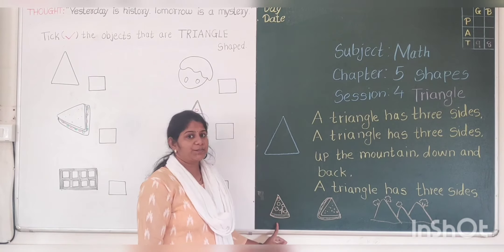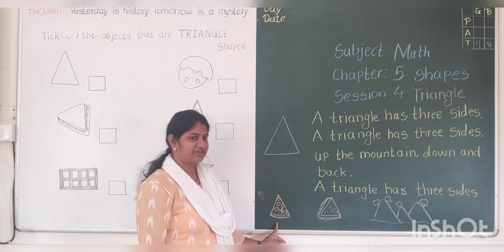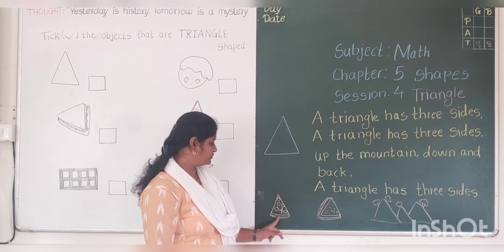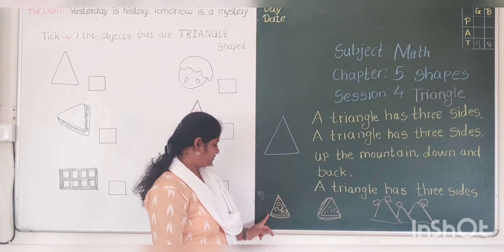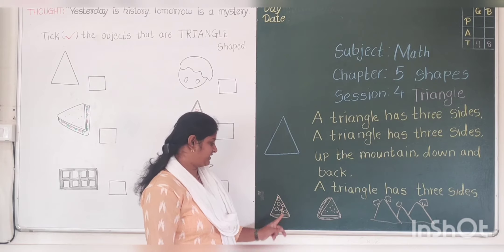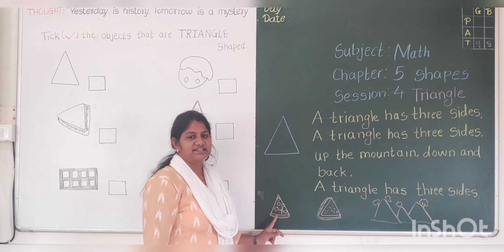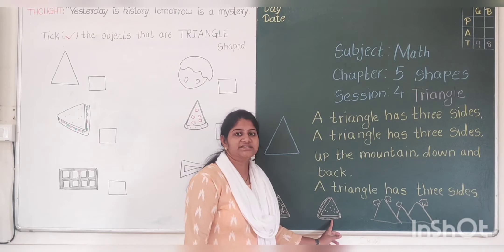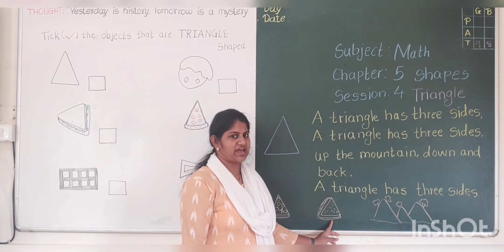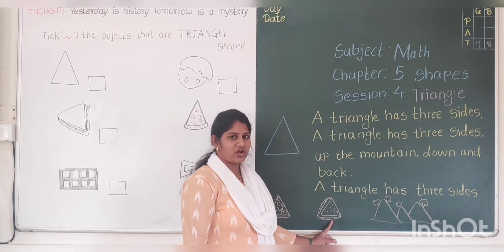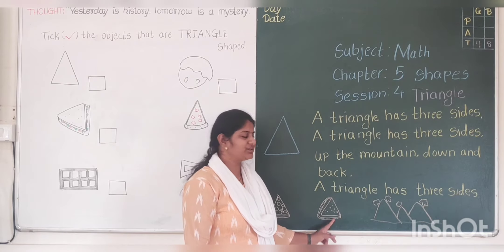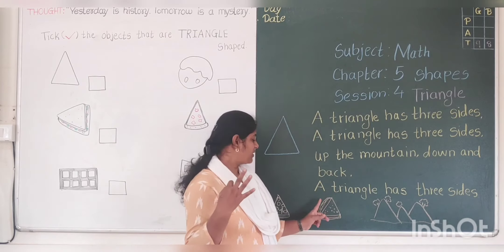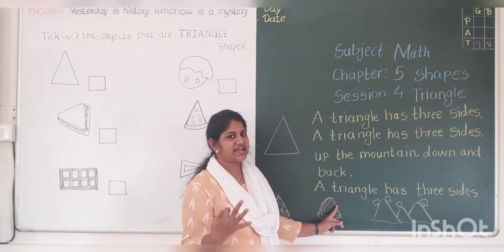This is pizza. And how many sides are here? 1, 2, 3. 3 corners and 3 sides. This is a piece of pizza. This is a sandwich. Sandwich has how many corners and how many sides? Let's count. 1, 2, 3. 3 corners. 1, 2, 3. 3 sides.